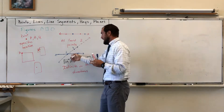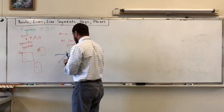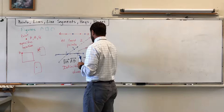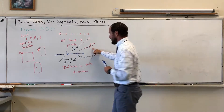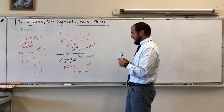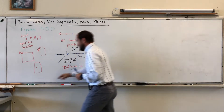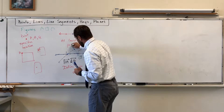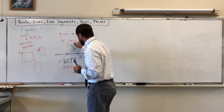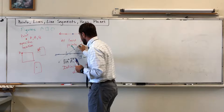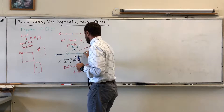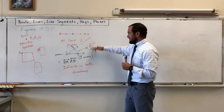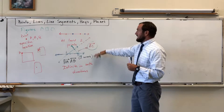If I want to refer to a different line, I would use A and C and change the letters to talk about that line. This labeling helps when we get to triangles and want to point to a certain angle made up of a certain part — that's the purpose of this labeling system.